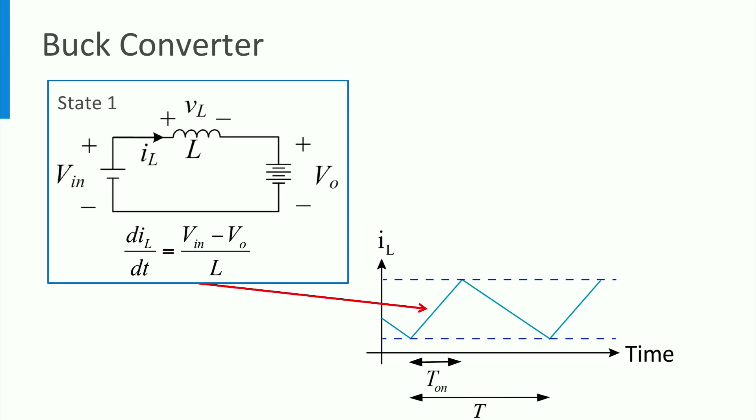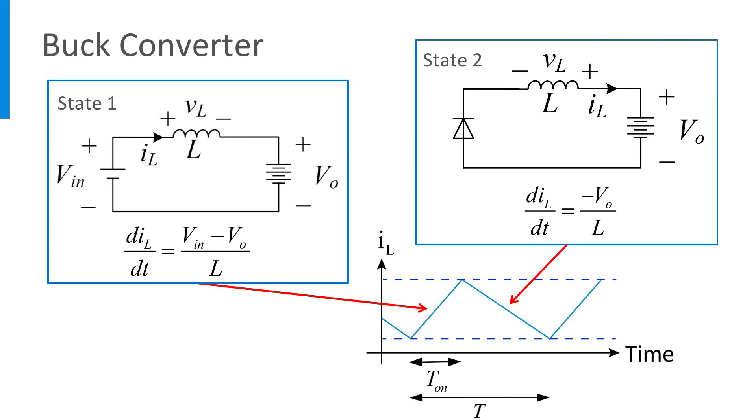Let us now see how the current of the inductor changes during these two operating states, as the inductor current is shown in the figure. During the first state, the current of the inductor increases, where the current derivative depends on the difference of the input and the output battery voltage. During the second operating state, the voltage across the inductor is equal to minus the output voltage. During this state, the inductor releases the stored energy to the battery, which has some internal resistance too. The current derivative only depends on the output voltage.